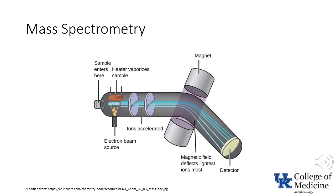Mass spectrometry is capable of determining the concentration of volatile anesthetic agents as well as respiratory gases. Initially in clinical practice, one device would serve several rooms — if ten rooms were connected, your room would only be monitored ten percent of the time. Later, infrared capnometers were added alongside the mass spectrometer, with an infrared capnometer in each room so real-time measurements could be performed at each location.